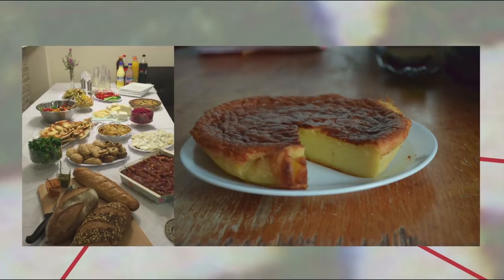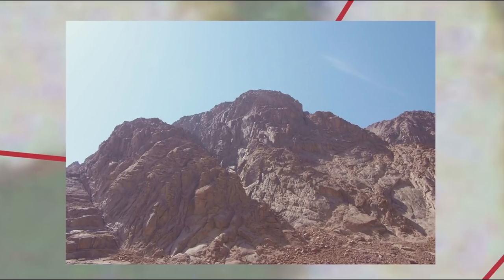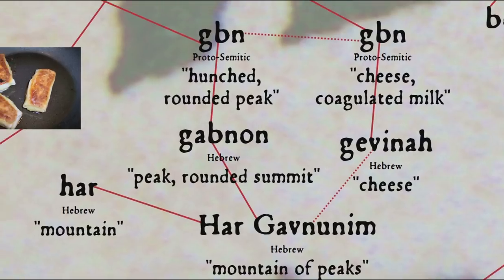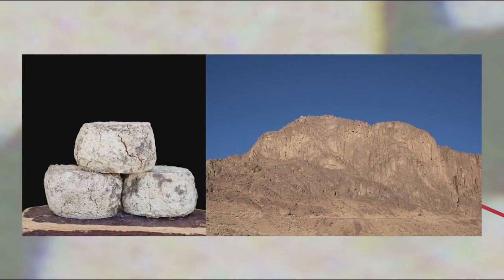During Shavuot there are a number of traditional foods eaten — in particular dairy foods — in reference to several Biblical passages and rabbinical arguments, such as Solomon comparing the Torah to milk: 'Like honey and milk, it lies under your tongue.' And in Psalm 68, Mount Sinai is referred to as Har Gavnunim, 'mountain of peaks,' with har meaning 'mountain.' The word gavnon, 'peak, rounded summit,' is etymologically similar to the word gevina, 'cheese,' since they would both go back to a triconsonantal root GBN. Whether GBN meaning 'hunched, rounded peak' and GBN 'cheese, coagulated milk' are the same is uncertain, though a rounded fermented cheese does look a lot like a rounded peak.